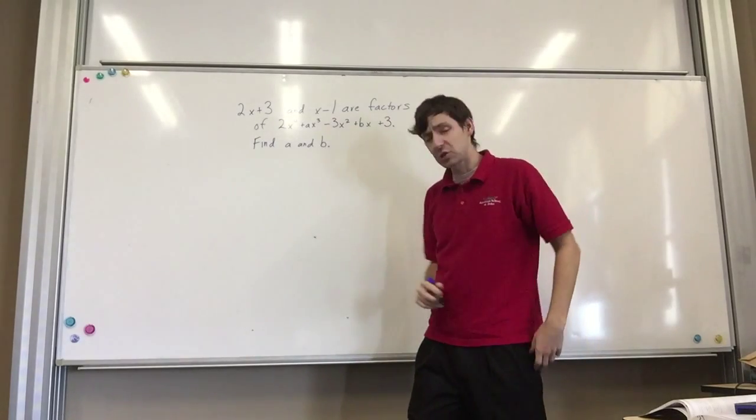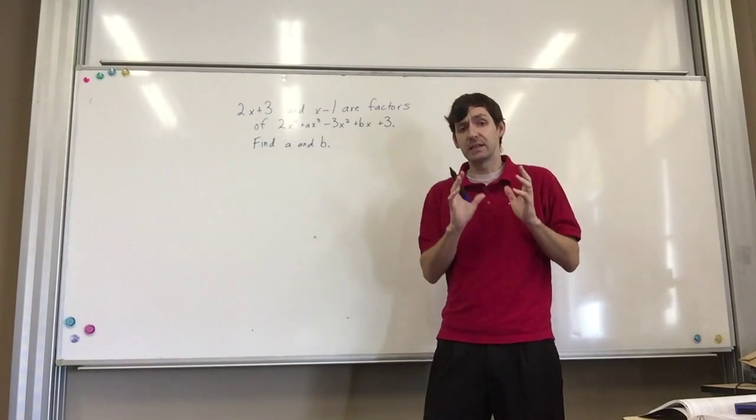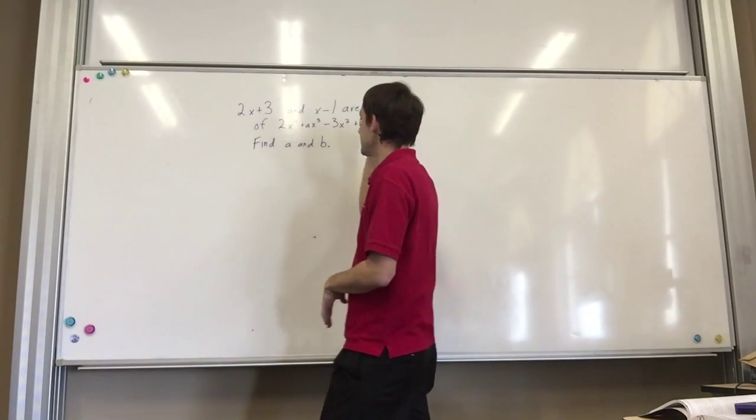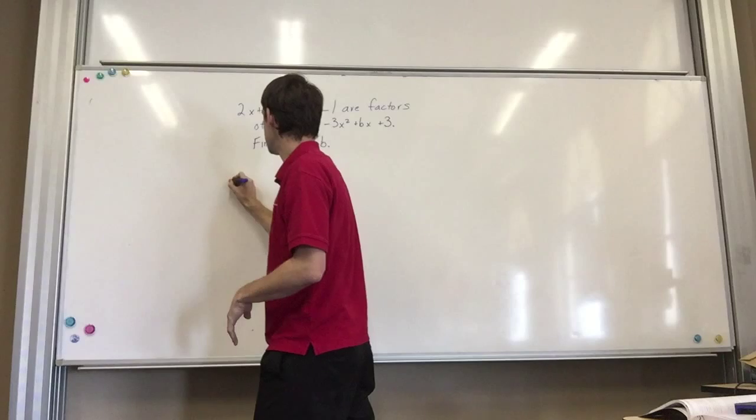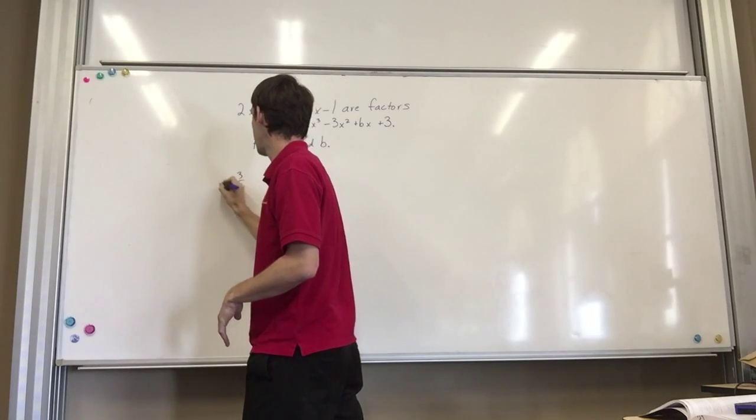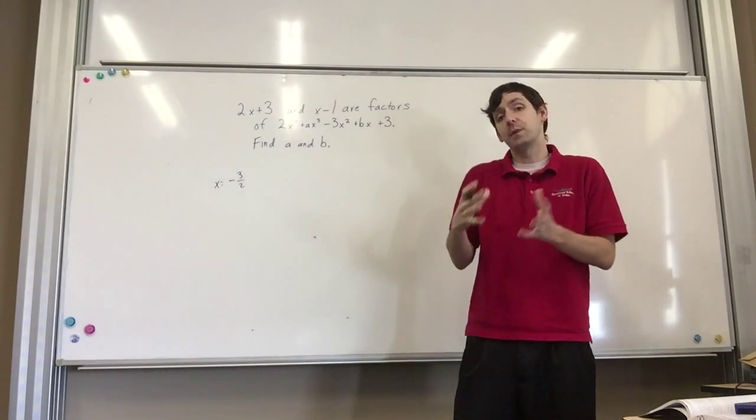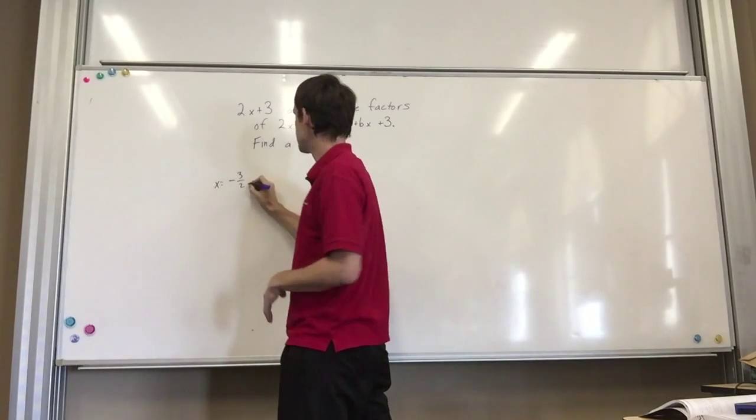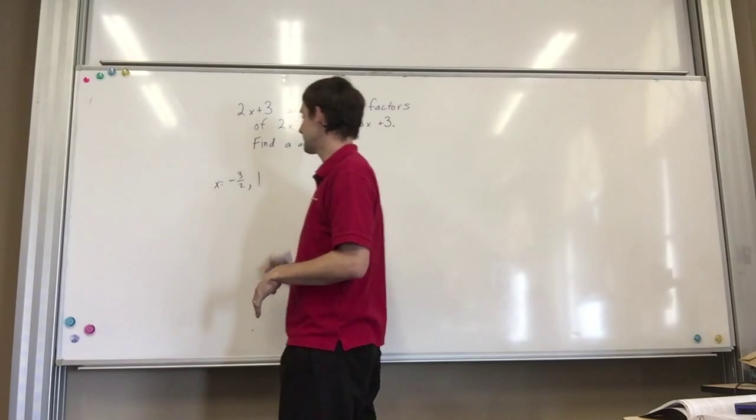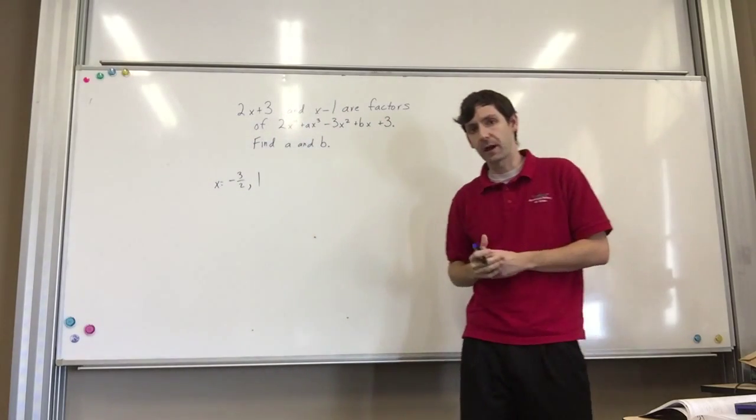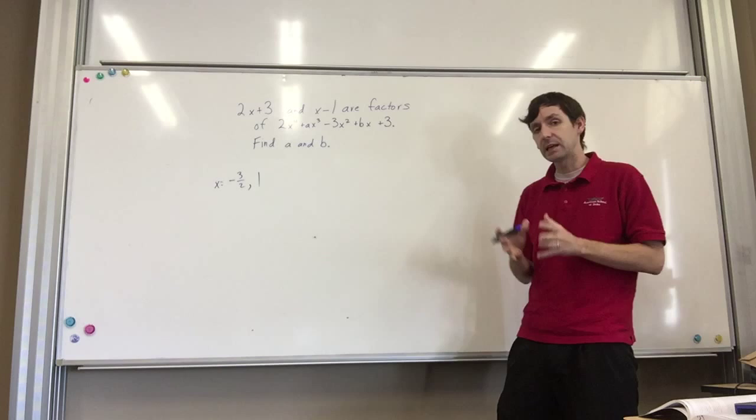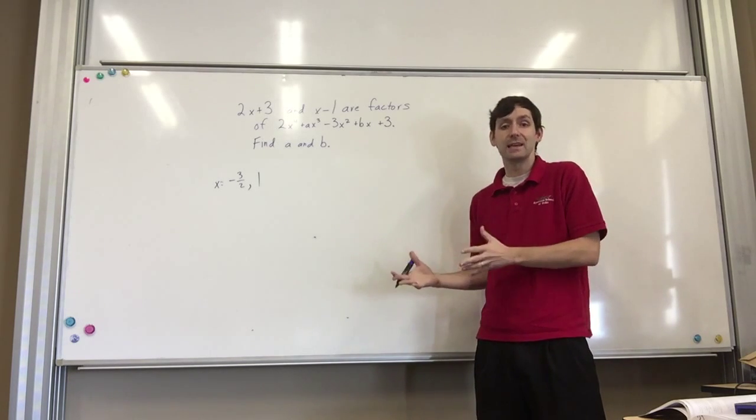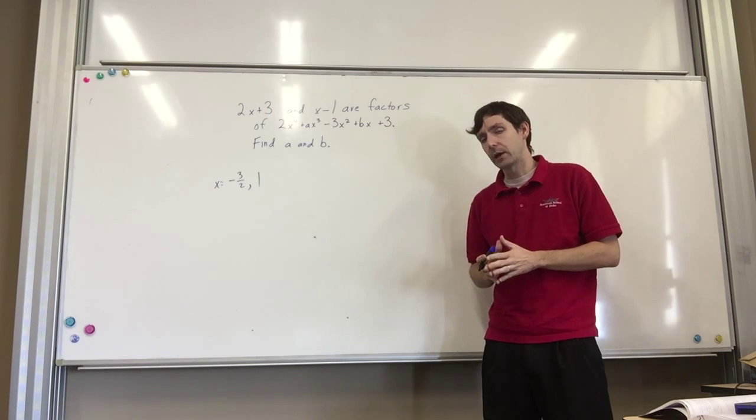So we're just going to start with this and we'll go from there. One way to do this is by using substitution. It was mentioned in class that we know that if 2x plus 3 is a factor, then that means that negative 3 halves, if x equals negative 3 halves, that should make the function equal to 0. It was also stated that because x minus 1 equals 0, then that means that 1 is another one of those zeros or factors. Now, using synthetic substitution or regular substitution, we can then get a couple of equations that help us out.